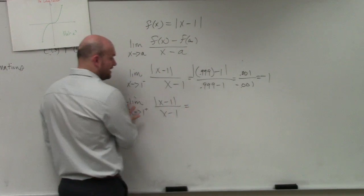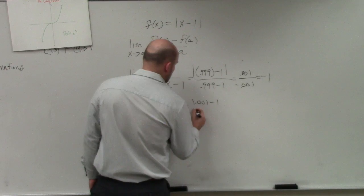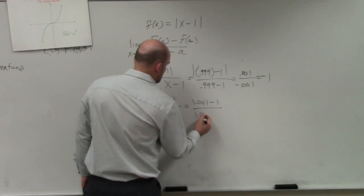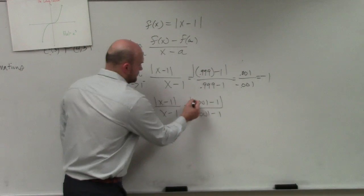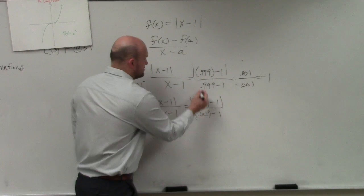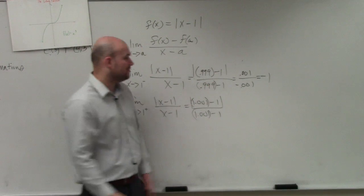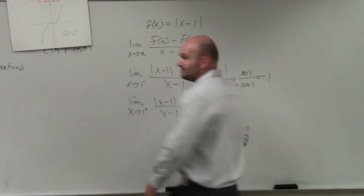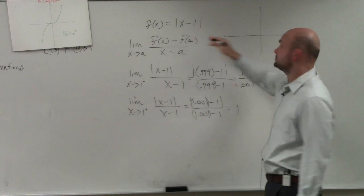But now when we check on the right-hand limit, I guess I could put those in parentheses as well. So now when we plug in on the right-hand limit, what we end up getting is 1. And does that really kind of make sense? Think about the graph. This graph is being shifted to the right 1.